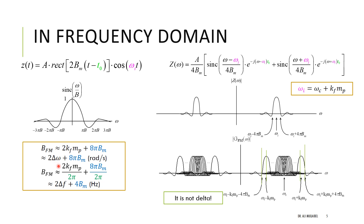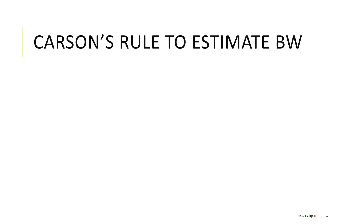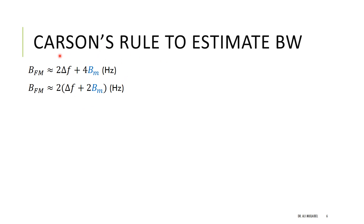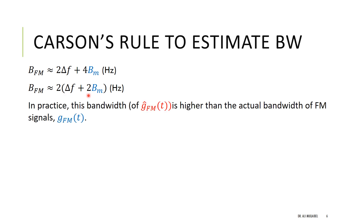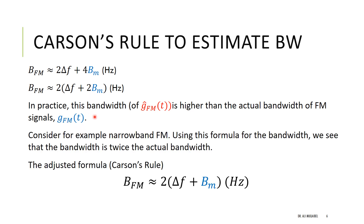This can be expressed in Hz by dividing by 2π, giving 2*Δf plus 4*B_m. However, this result applies to the red staircase signal, not the original blue signal. Because of the discontinuities in the staircase approximation, the red signal is assigned a higher bandwidth than the true signal. Carson carried out experimental validation and showed this formula overdoes it — the actual bandwidth for the blue signal is less.